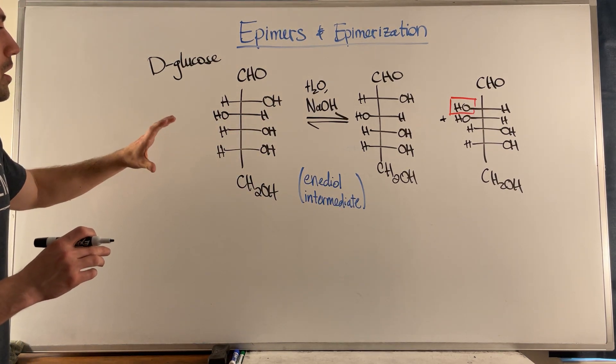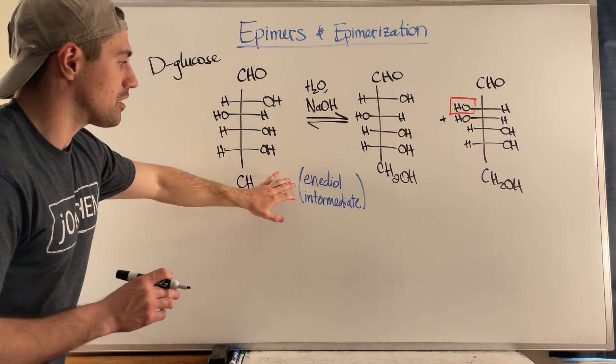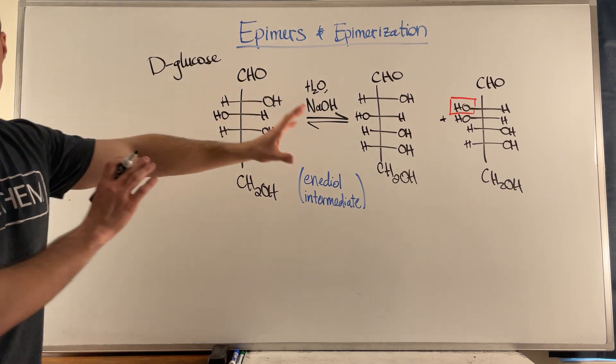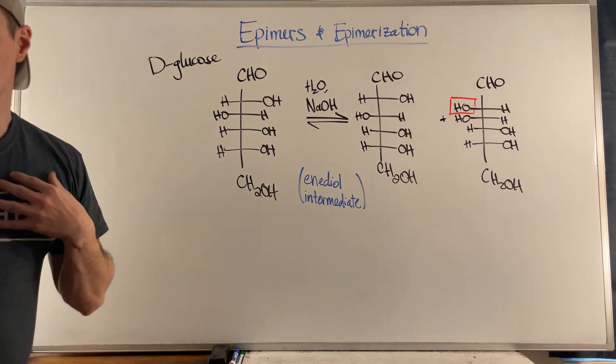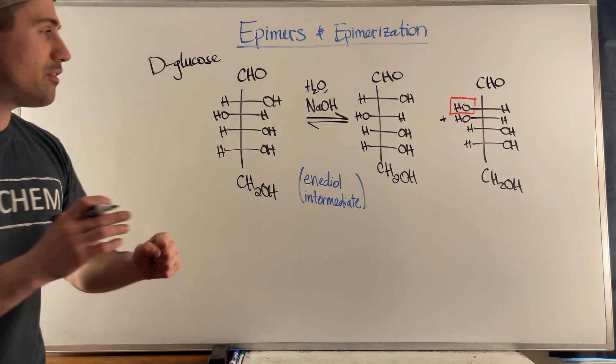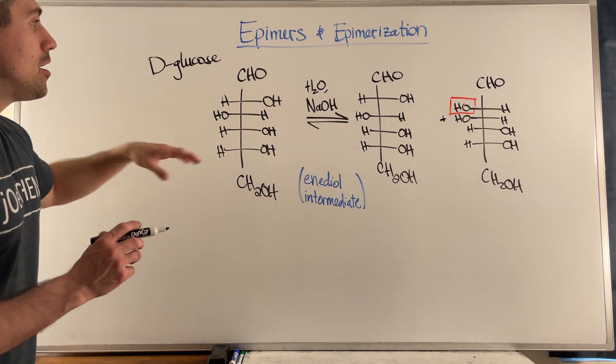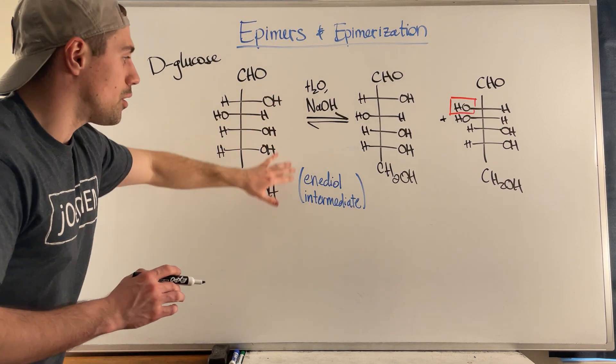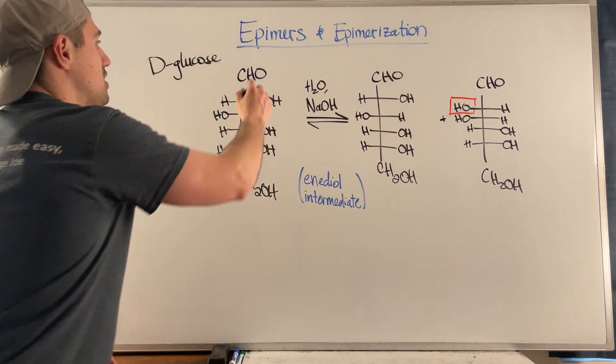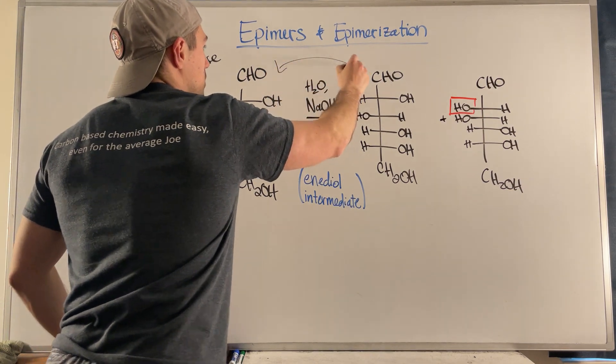What happens? So you will actually go through an intermediate called an enediol. I'm not drawing the mechanism here. I've never really, and I could be wrong, but I've never seen it asked. So I didn't think it was that important to have in the video. But you go through this equilibrium where, when you go through this intermediate, you either revert to your initial, right? This is the same structure. This is D-glucose on both sides.